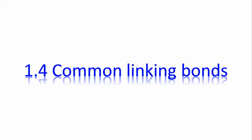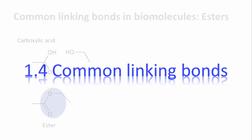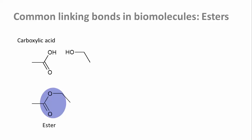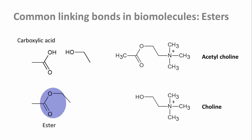Functional groups do the chemistry and biochemistry, so let's look at some of the most important ways in which those functional groups are joined up. Carboxylic acids react with hydroxyl groups to give esters. For example, acetylcholine, a neurotransmitter, is the acetyl ester of choline.